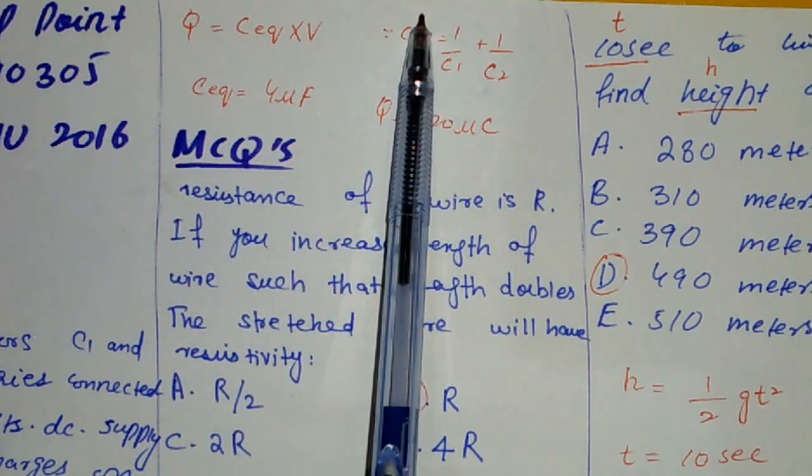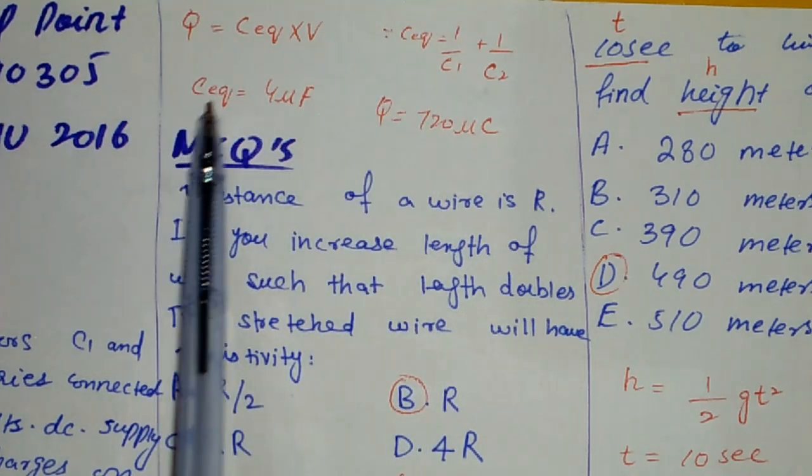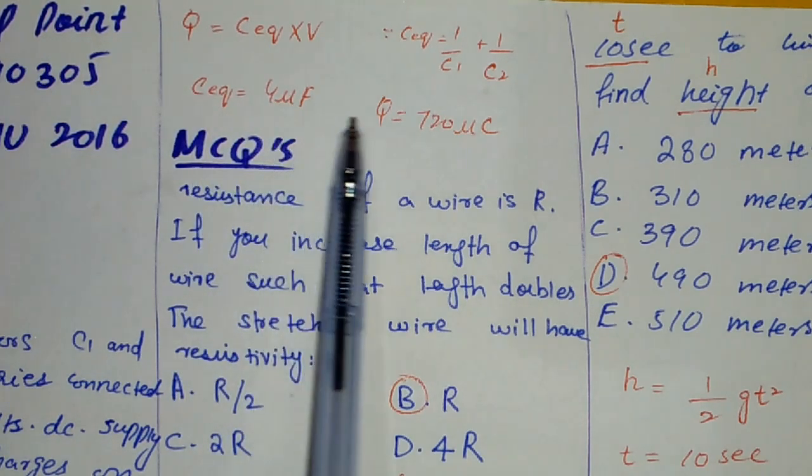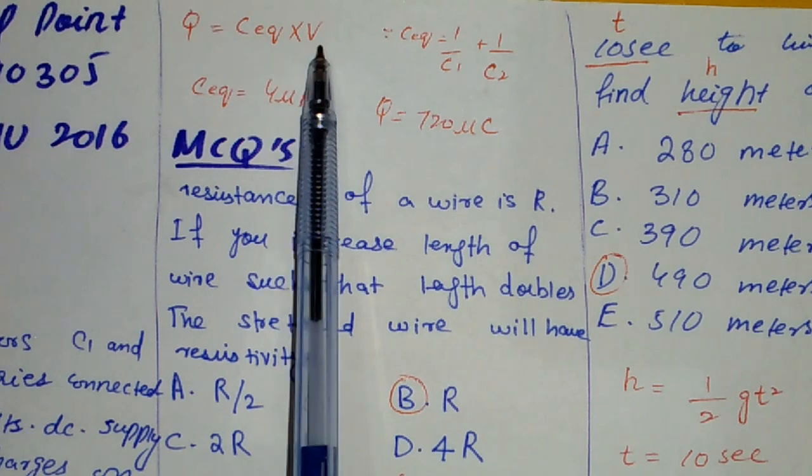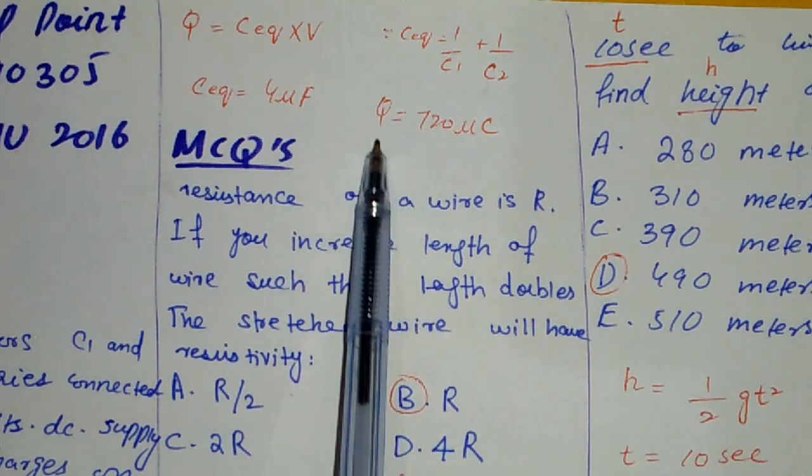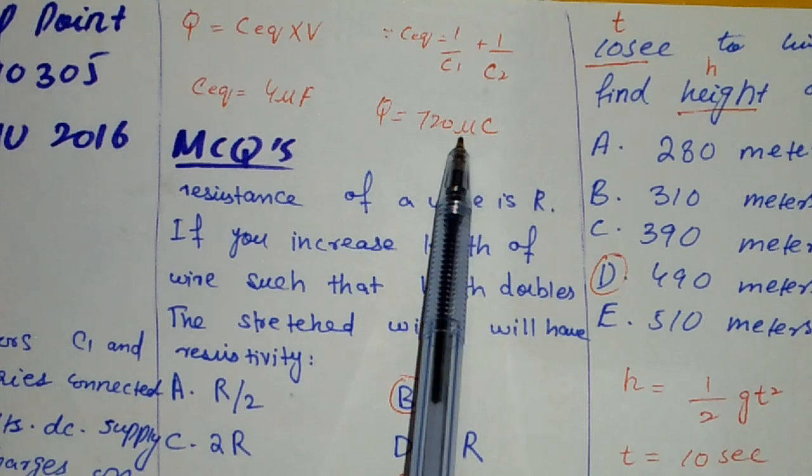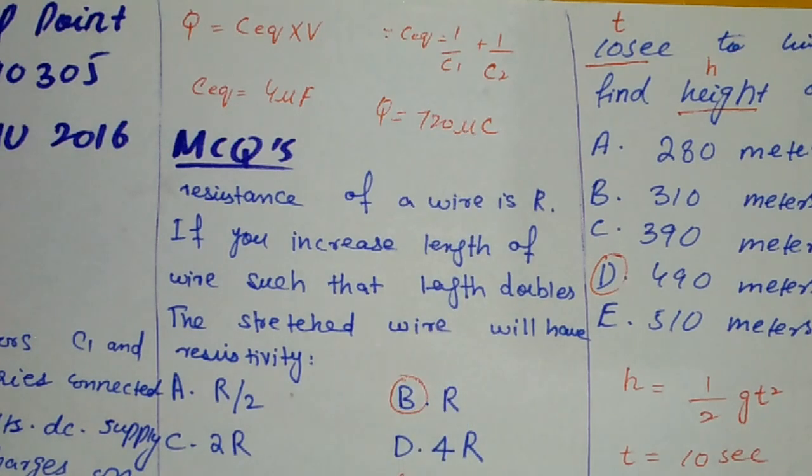We will solve all this. For microfarad, simply put it in the formula and put in the potential difference value. The answer will be 720 times 10 to the minus 6 coulombs.